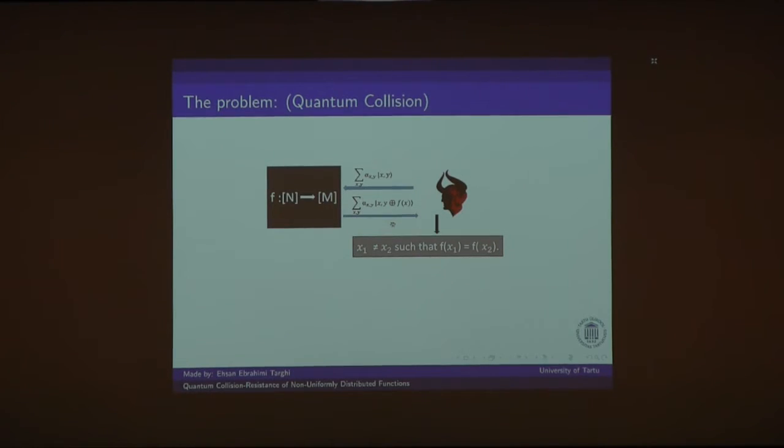Quantum Collision Problem. Suppose that you have function f with domain size n and codomain size m, and a quantum adversary that can query function f in superposition of inputs and gets back the superposition of outputs. And at the end, the adversary tries to output two distinct inputs that map to the same output, or the adversary tries to output a collision.